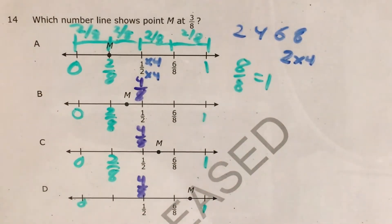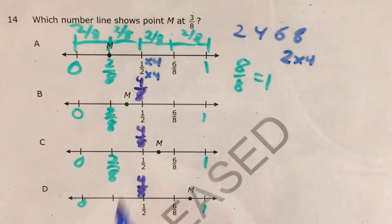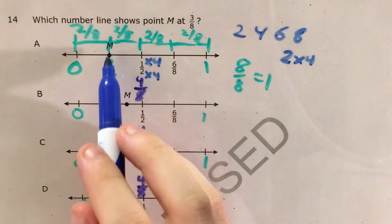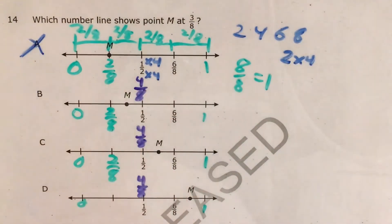And at this point, I'm going to see which number line has point M that could represent three-eighths. So if I look at choice A, point M is right here on two-eighths. Two-eighths is not three-eighths, so it can't be choice A.